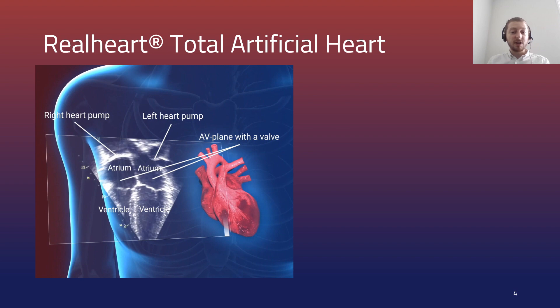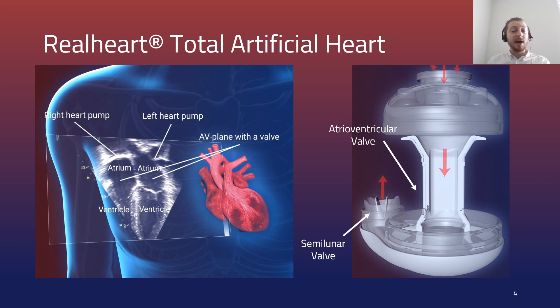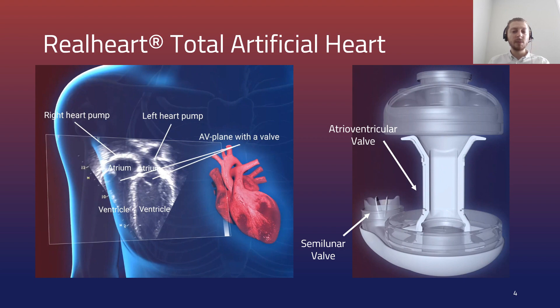It achieves this pulsatile flow by mimicking the mechanics of the native heart. The atrioventricular plane of the native heart can be seen to translate up and down to squeeze blood out of the heart. The Real Heart Total Artificial Heart uses this same technique coupled with a pair of bileaflet mechanical heart valves to govern the forward motion of the blood.